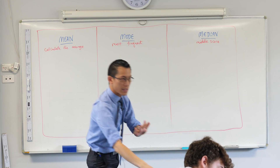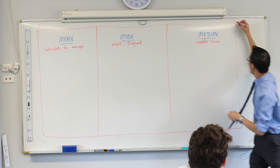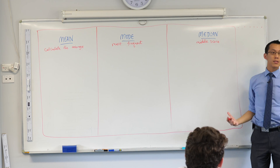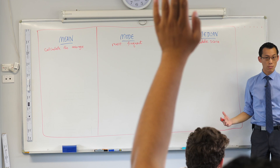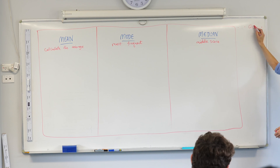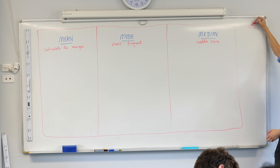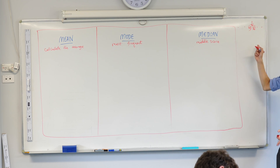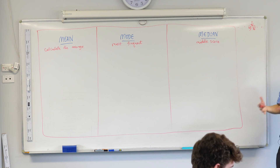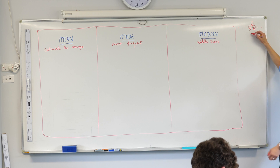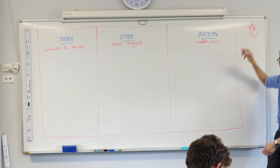What do you do when there's an even number of scores? If you had one, two, three, four, five, six scores, where's the median? It's the average between those two middle values. So if this was five and this was six, the median wouldn't be five nor six — it'd be five and a half. So we take the mean of those two.